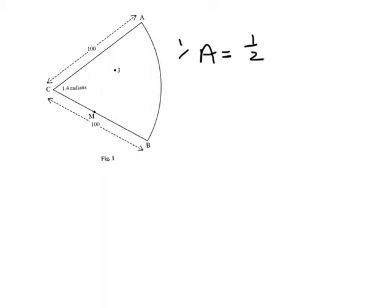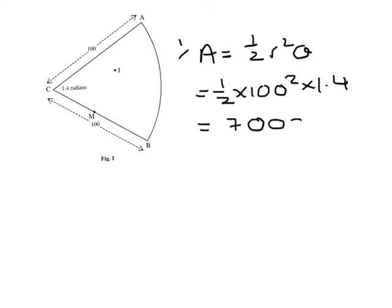and the area is a half R squared theta when we're working in radians. So that's a half times 100 squared times 1.4, which is an area of 7,000.